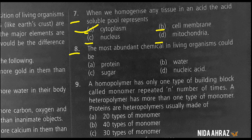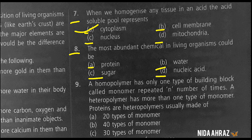The most abundant chemical in living organisms could be: protein, water, sugar, or nucleic acid. The correct choice is option B — water.